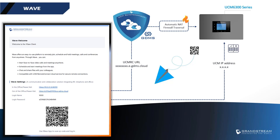This is an example of a WAVE welcome email that the UCM sends to a user. It includes the QR code for the WAVE app and the settings for WAVE web and desktop clients. The email includes the private IP address of the UCM and the FQDN of the remote connect. The UCMRC FQDN will be included if you have a UCM added to your GDMS account and assigned a UCMRC plan, including the free trial plan. Otherwise, it will include the public IP address of the UCM if configured under the HTTP server WAVE settings.